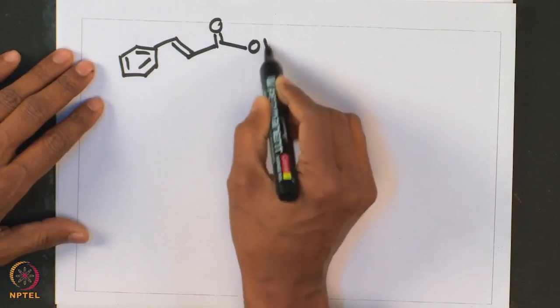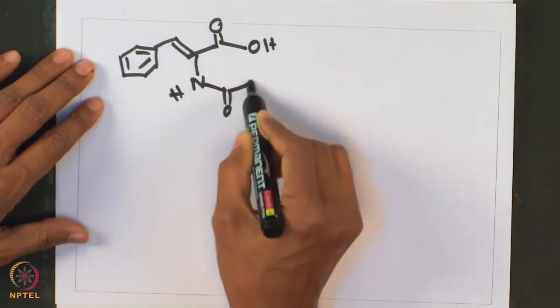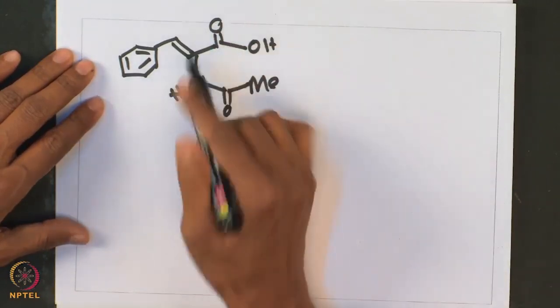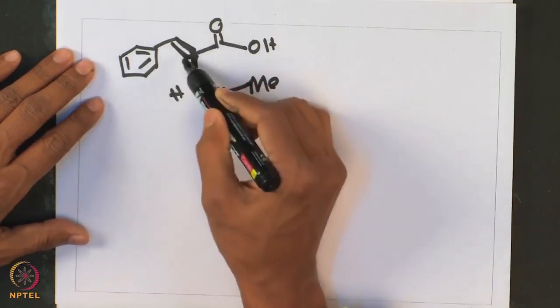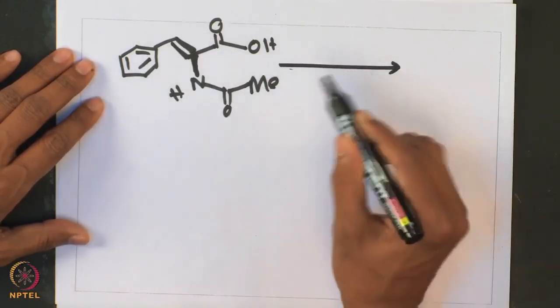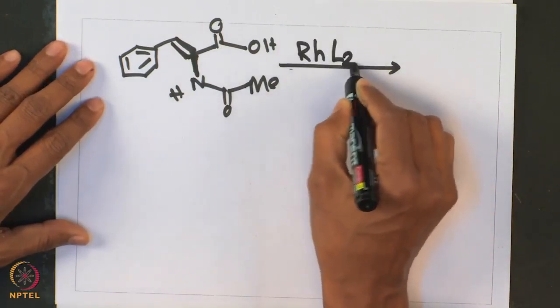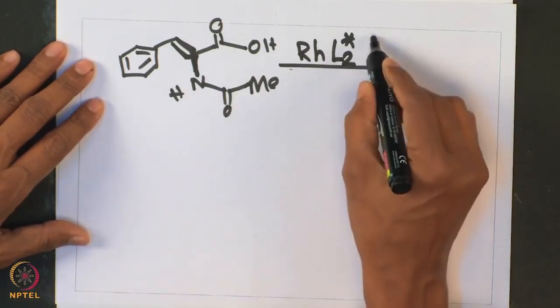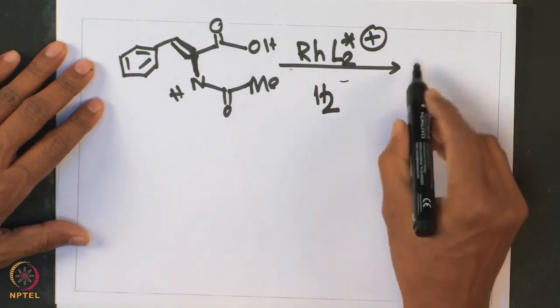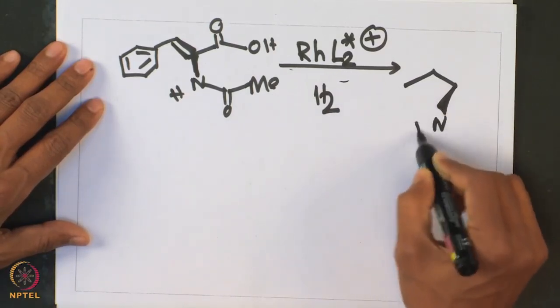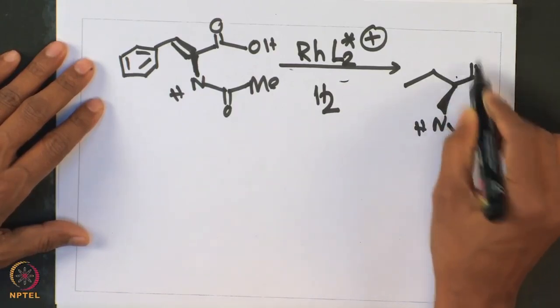Let us look at one such example — an aspartame synthesis or similar type of synthesis. We have a substrate with an acid and an NHCOMe group. These are the two coordinating groups, but our major interest is at the olefin. We want alkane formation — saturation of this unsaturated partner — to give a stereocenter in this particular case. The catalyst used is the rhodium di-coordinated ligand complex with a chiral ligand and a cationic complex, using hydrogen to give an overall species that is interesting for asymmetric reaction.